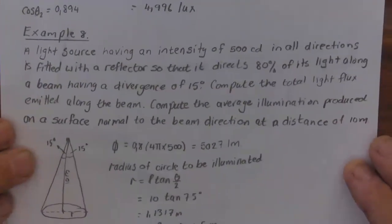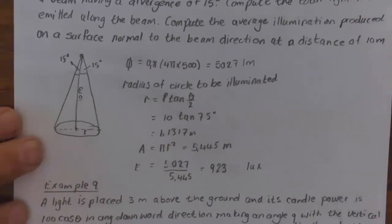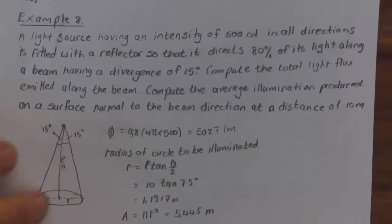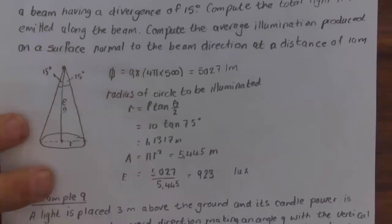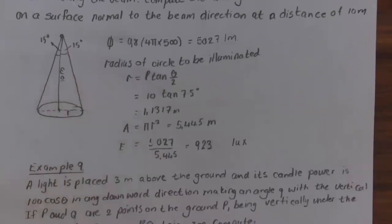Example 8: A light source of 500 candela in all directions is fitted with a reflector directing 80% of the light along a beam with a divergence of 15 degrees. Compute the total light flux emitted along the beam and the average illumination on a surface normal to the beam at 10 m. Total flux = 0.8 × 4π × 500 = 5027 lumens.